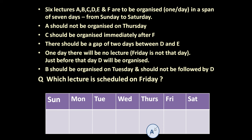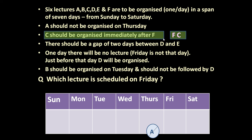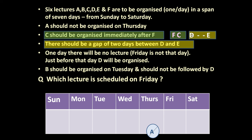Now based on the given information let us complete this table. A should not be organized on Thursday — let us mark Thursday: A is not on Thursday. C should be organized immediately after F, but we don't know where F or C are yet, so F and C will be together wherever they are placed. There should be a gap of two days between D and E, but we don't know their positions yet.